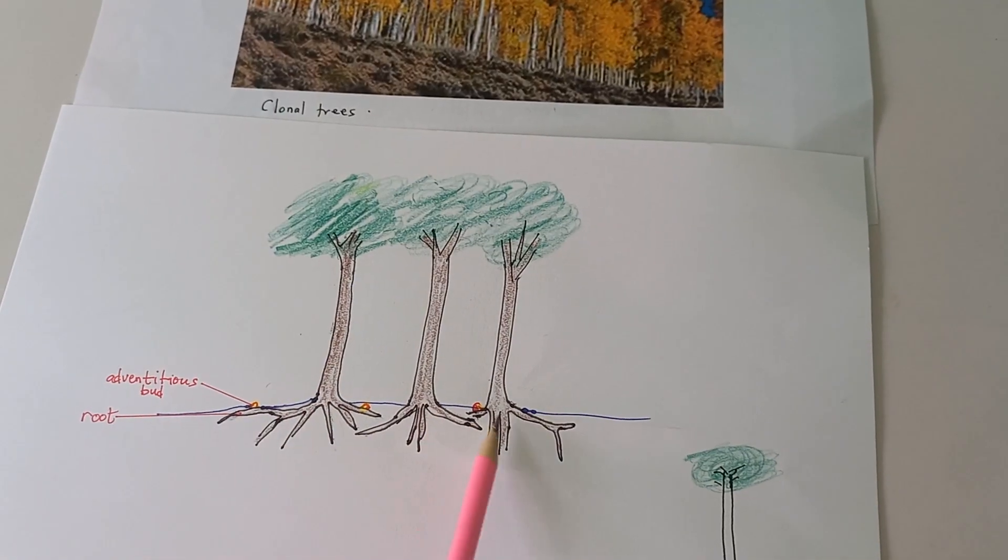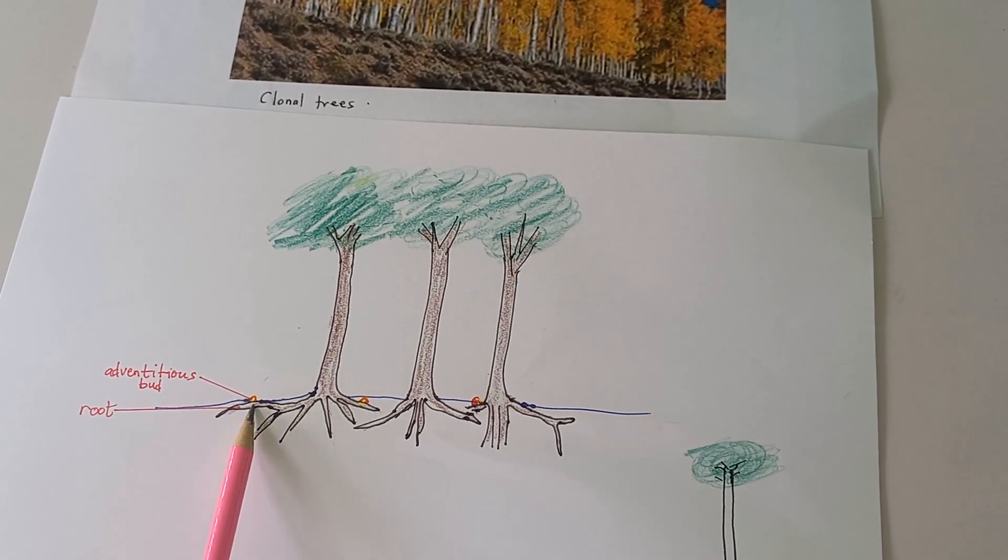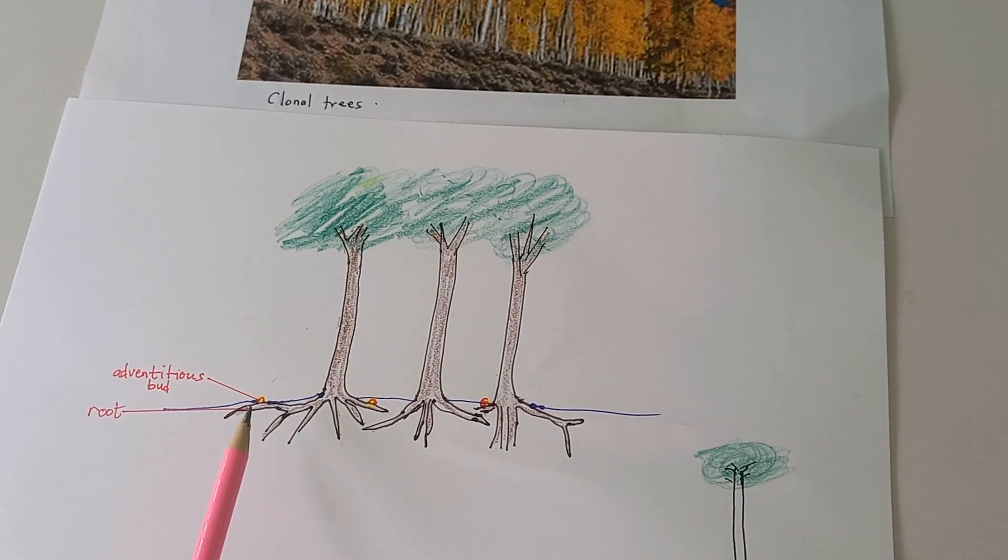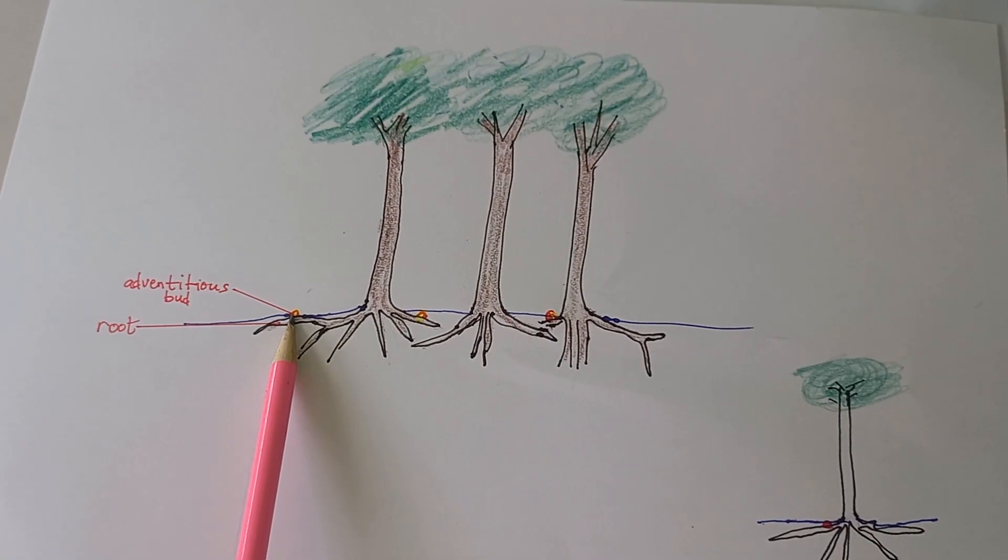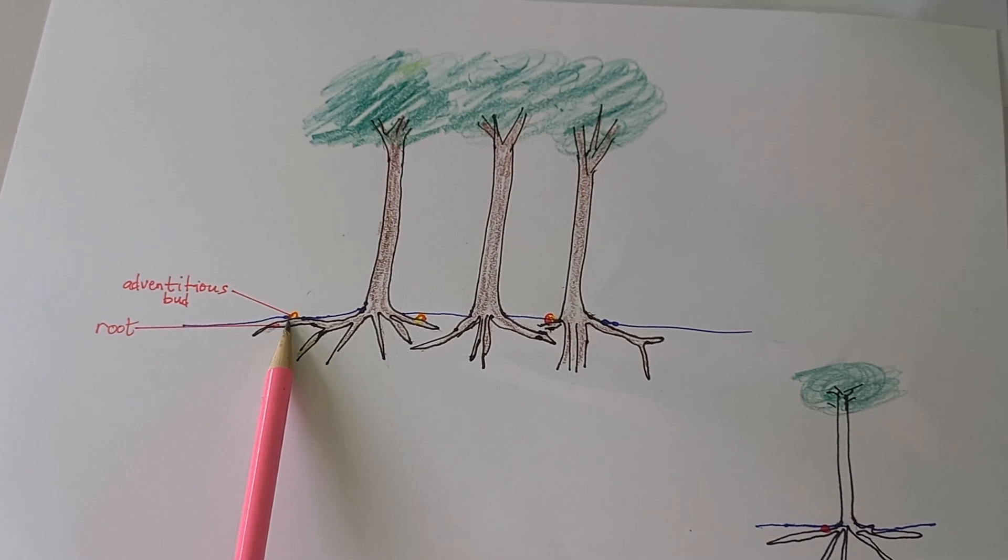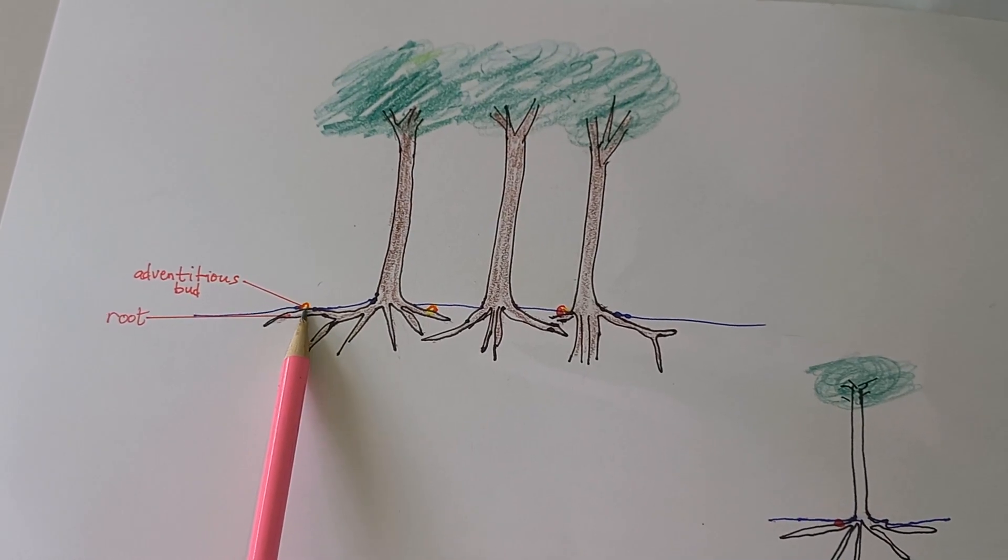The roots that produce these trees in the clonal trees, here is a drawing that I have made. Those roots bear adventitious buds. This is an adventitious bud. This is a root. Adventitious bud is a bud that grows out of place. Anything adventitious grows out of place.